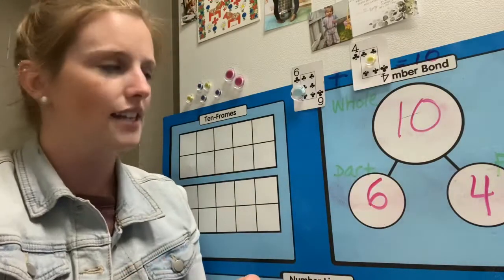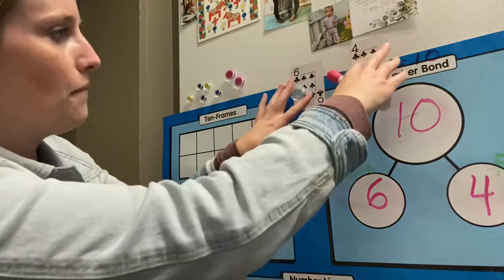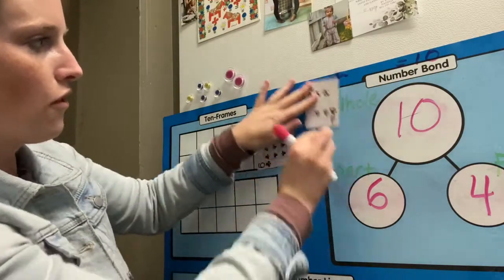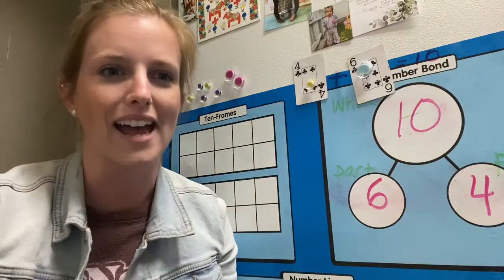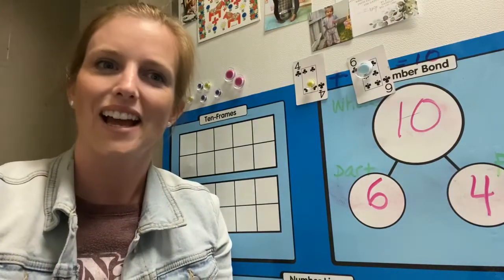Or you could even switch the addends. Use a commutative property. And you could do four plus six is the same as ten.